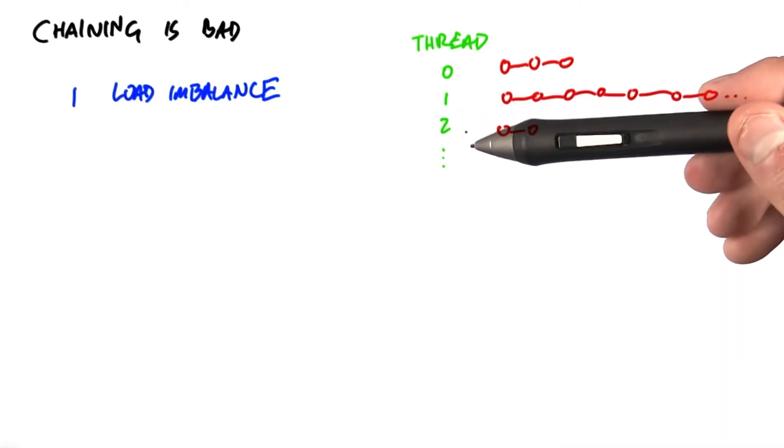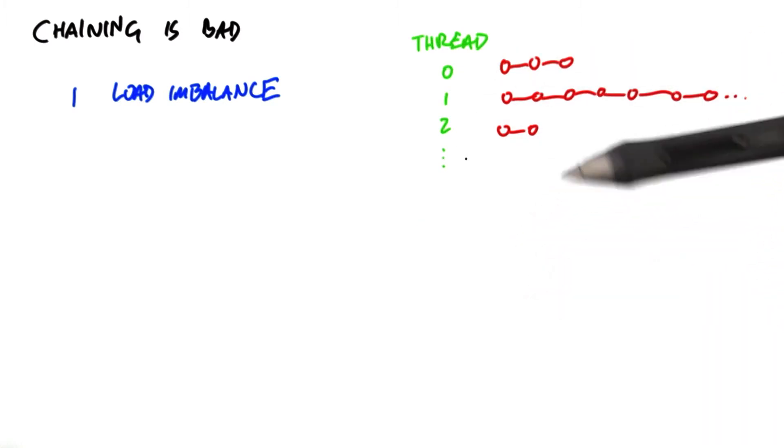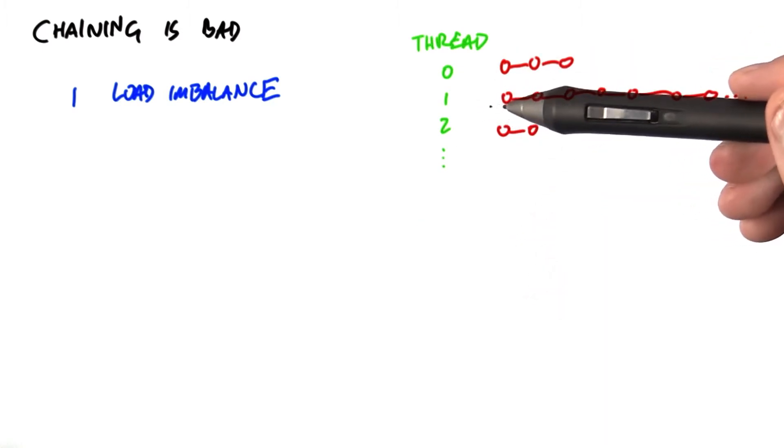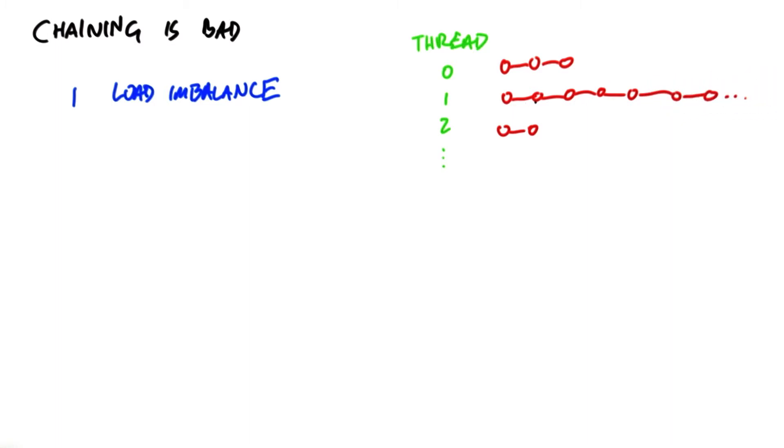Some threads, like thread two, might find their item right away. Some threads, like thread one, for instance, might have to visit many or even all the items in a lengthy linked list before finding its item.